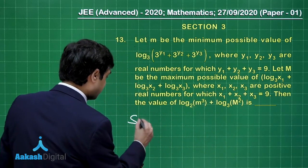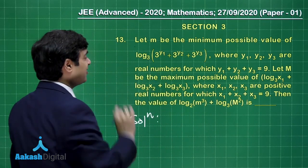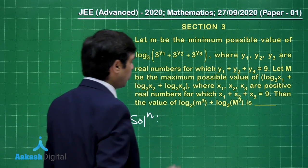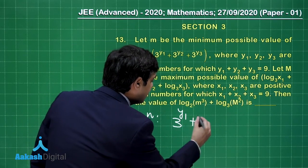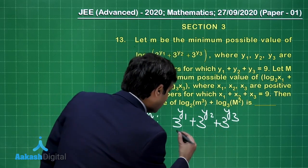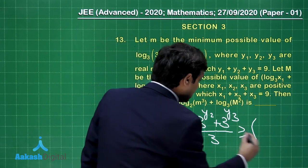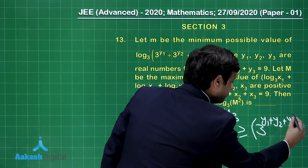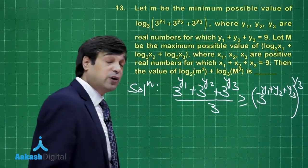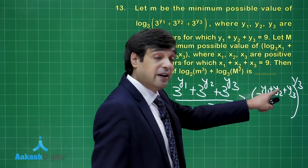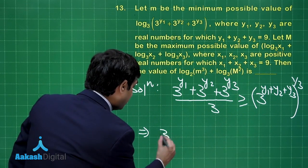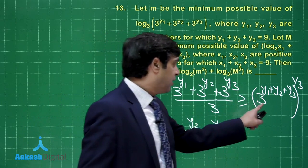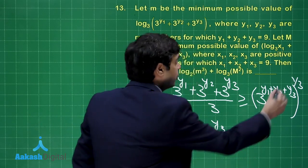Let us try what the question is talking about. We can clearly say that we need the minimum value of log base 3 of (3^y1 + 3^y2 + 3^y3). Forget about the log for the time being and think about (3^y1 + 3^y2 + 3^y3) divided by 3, which is greater than or equal to the cube root of the product — that means 3^((y1+y2+y3)/3). Now, y1 plus y2 plus y3 is given as 9, so this equals 3^4.